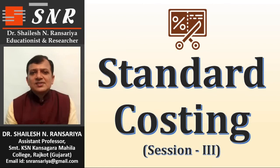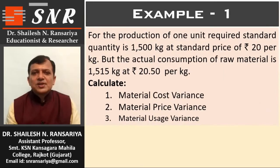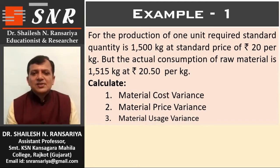See example number 1. For the production of 1 unit, the required standard quantity is 1500 kg at the standard price of Rs. 20 per kg. But the actual consumption of raw material is 1515 kg at Rs. 20.5 per kg. Now, calculate material cost variance, material price variance, and material usage variance.